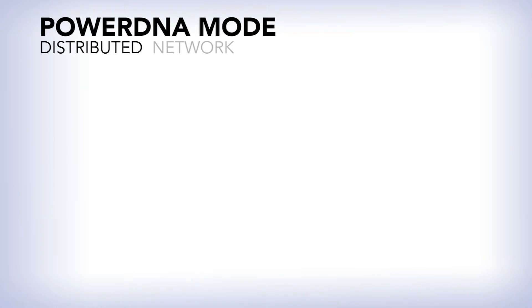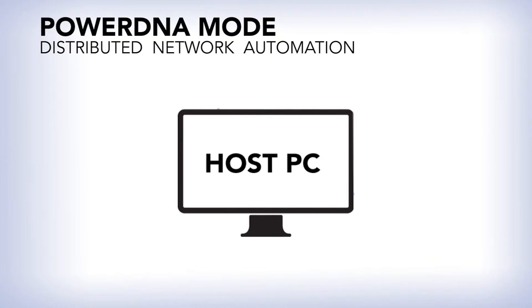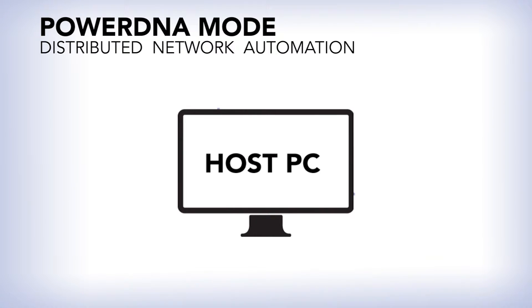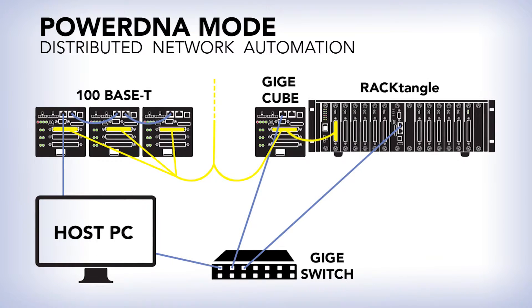Power DNA Mode — DNA stands for Distributed Network Automation. This mode requires a PC to run the program, and the I/O modules, or IOMs, can optionally be networked together.